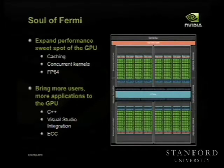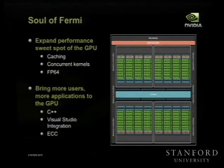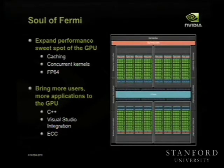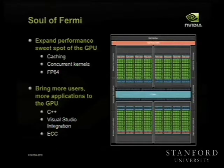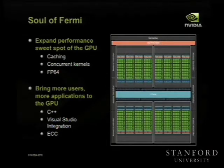Some of the goals when we started Fermi: we wanted to expand the sweet spot of the GPU — caching, concurrent kernels — these are compute-centric views. We wanted to make it much easier to use GPUs for general purpose computing applications: C++, Visual Studio integration, and ECC. In graphics, if you take an error on a frame, you're going to draw it again 1/60th of a second later — it might show up as a little blip on the screen. But for computing applications, a data error is not acceptable.